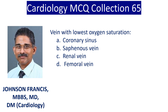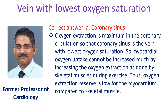Vein with lowest oxygen saturation. A: coronary sinus, B: saphenous vein, C: renal vein, D: femoral vein. Correct answer A: coronary sinus. Oxygen extraction is maximum in the coronary circulation, so the coronary sinus is the vein with the lowest oxygen saturation.